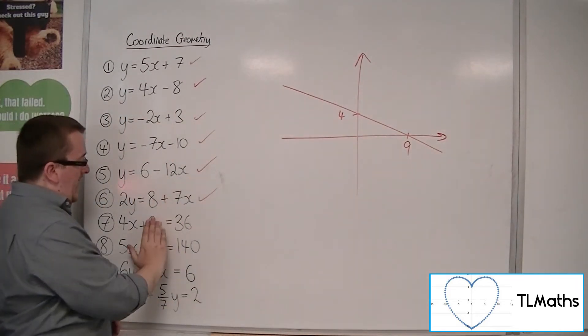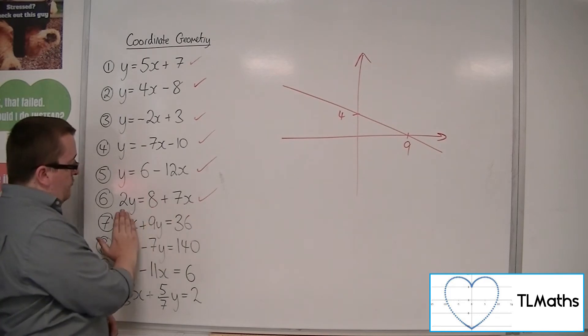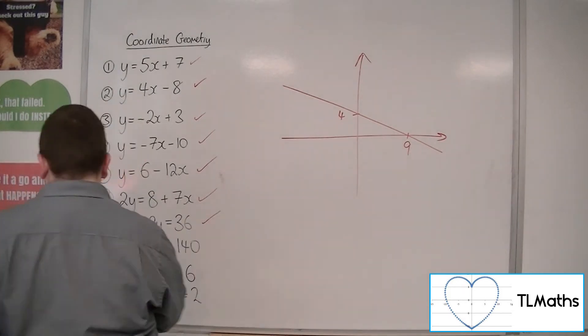Okay, so once again, cover up the 9y for y is 0. So 4x equals 36, so x equals 9. Cover up the 4x. 9y equals 36, so y must be equal to 4. Okay, and that's number 7.